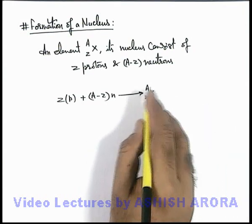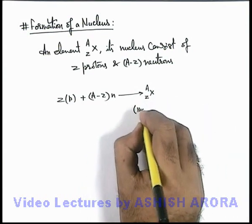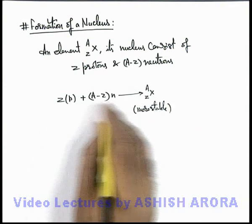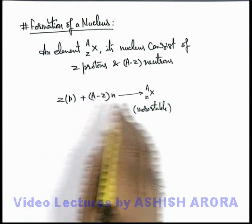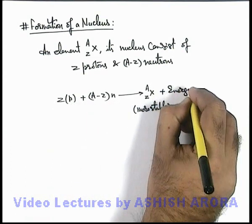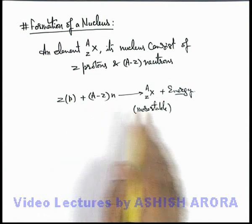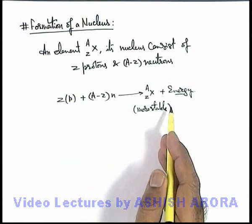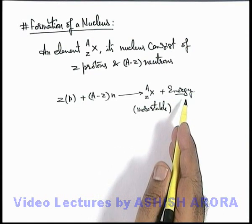And we know that the nuclear form is a more stable form compared to the free nucleons. So whenever a nucleus is produced, some energy must be released. As you all are aware, in any reaction when products are more stable, the reaction will be exothermic and some energy will be released.